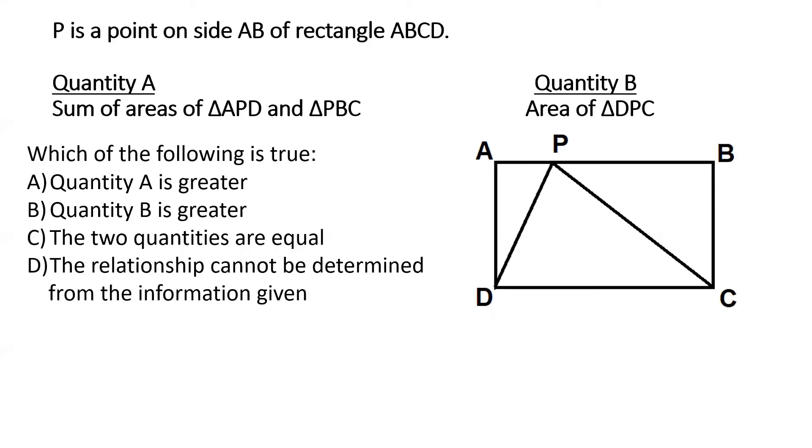And these are the typical comparisons that are provided in quantitative reasoning questions asked in the GRE. So let's get back to this particular problem. We are asked to compare the sum of the areas of triangle APD and triangle PBC versus the area of triangle DPC.